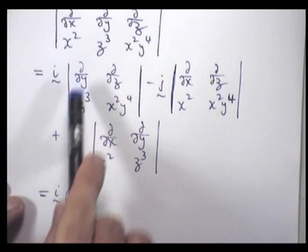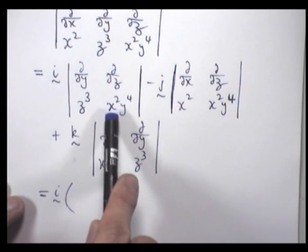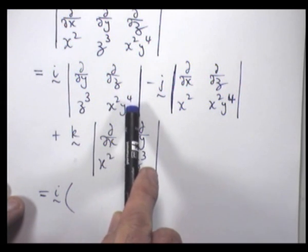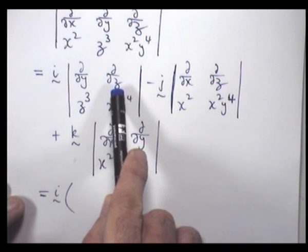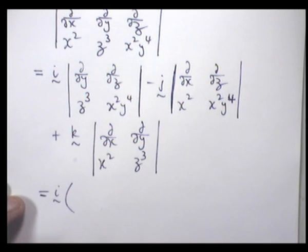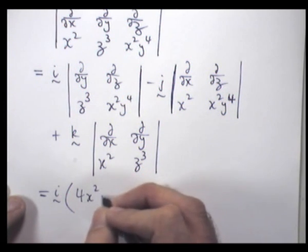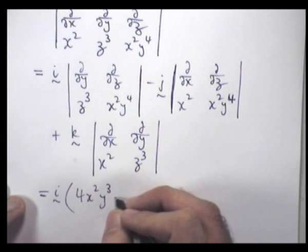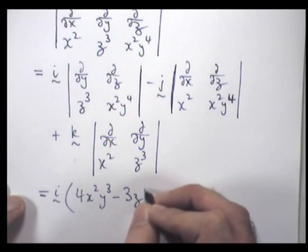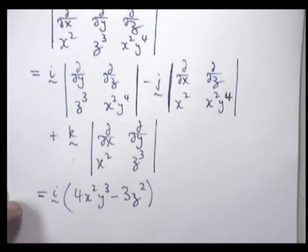The first determinant is going to give us d/dy of x squared y to the 4th minus d/dz of z cubed. Okay, so it's going to be something like 4x squared y cubed minus 3z squared times i.